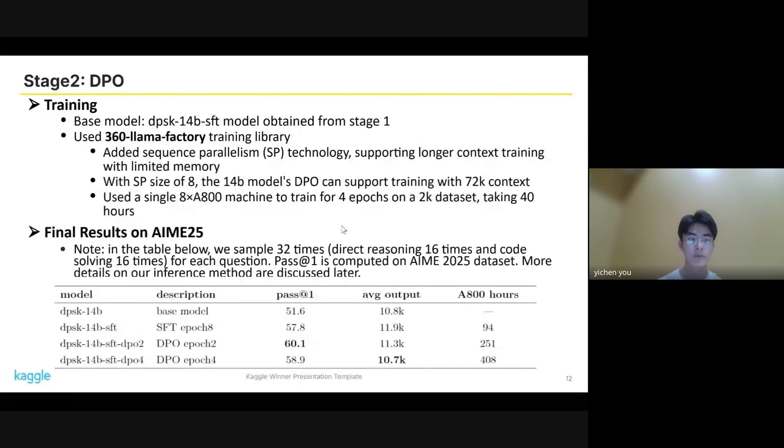Finally, we filtered 2K pairs for training in the DPO stage. We used a single A800 machine to train for four epochs on the 2K dataset, which only took four hours. The table below shows the final results on AIME 2025. We sampled 32 times for each question, including direct reasoning 16 times and code solving 16 times. It only took over 400 A800 machine hours, which is relatively minimal time.